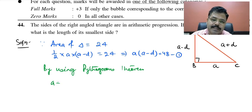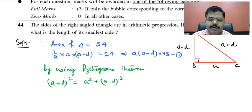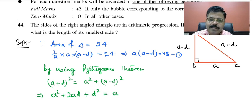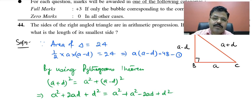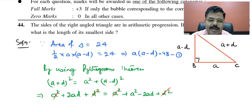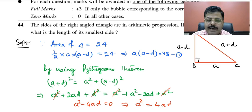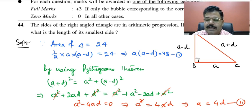By Pythagoras theorem: (a plus d)² = a² + (a minus d)². Expanding: a² + 2ad + d² = a² + a² − 2ad + d². Simplifying, the d² terms cancel and we get 4ad = a², so since a ≠ 0, we get a = 4d. This is equation two.